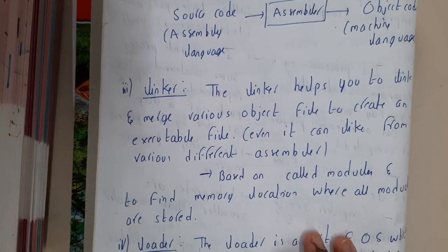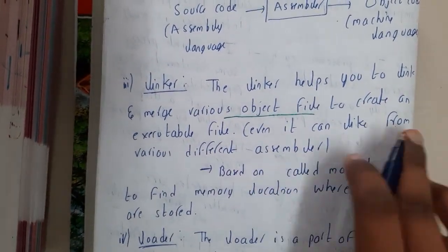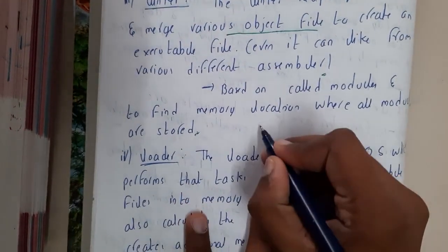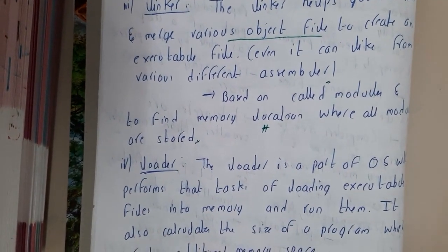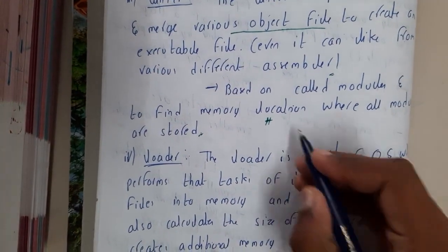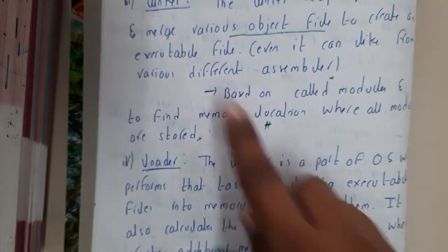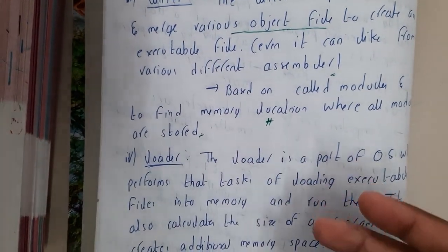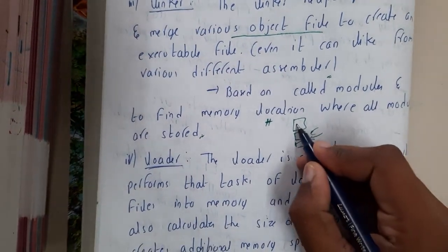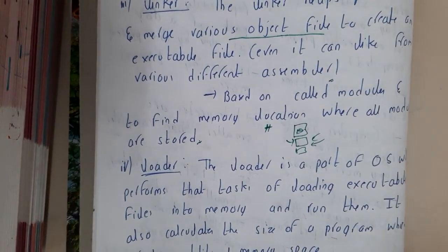The linker helps to find, link, and merge various object files to create an executable file, even from various different assemblers, based on calling modules and memory locations where all modules are stored. When we include header files like '#include <stdio.h>', those are files containing code that must be joined with our program before the final stage of conversion. This process is done by linkers and loaders. With your source code, they add the required header files and external files. For example, the definition of printf is in stdio.h, so that file gets linked with our source code.